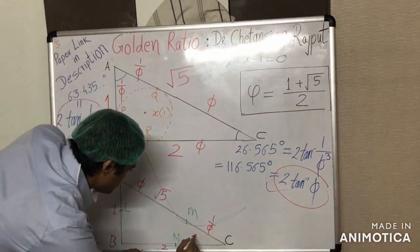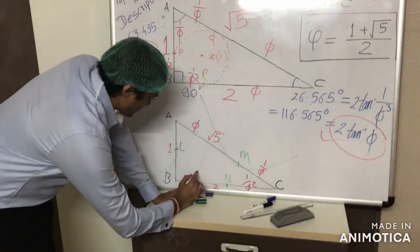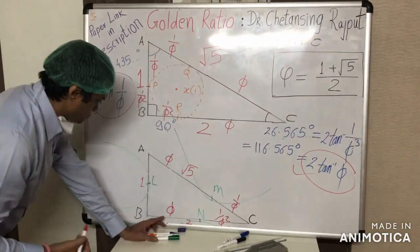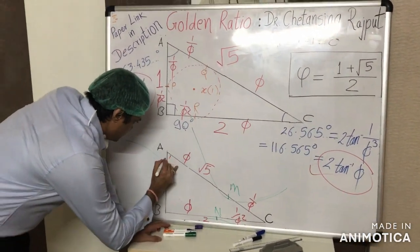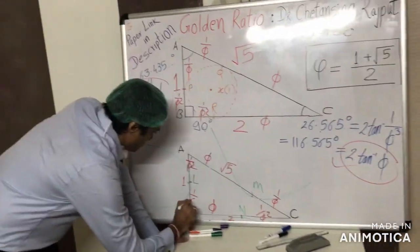This distance BM, this is equal to golden ratio. This distance AL, this is 1 upon phi squared, and this is 1 upon phi.